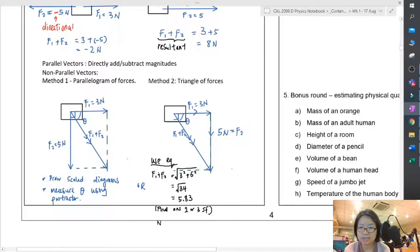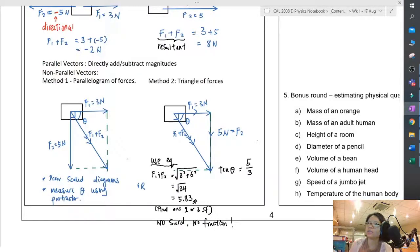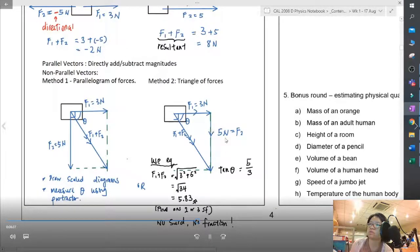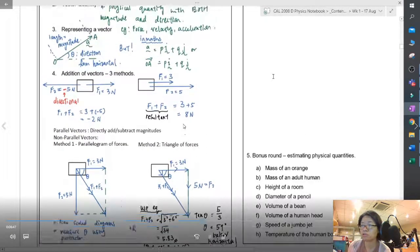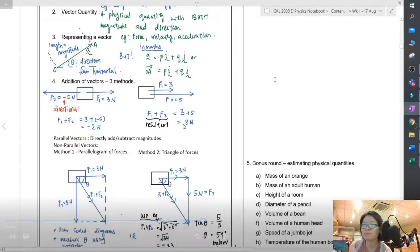The final answer in physics: no surd, no fractions. Write 2 or 3 SF. Please do not write surd, I will minus 1 mark because I cannot check your significant figures. We can find theta using tangent, opposite over adjacent. 5 divided by 3. This is 59 degree below the horizontal. Below the positive horizontal will be more accurate.